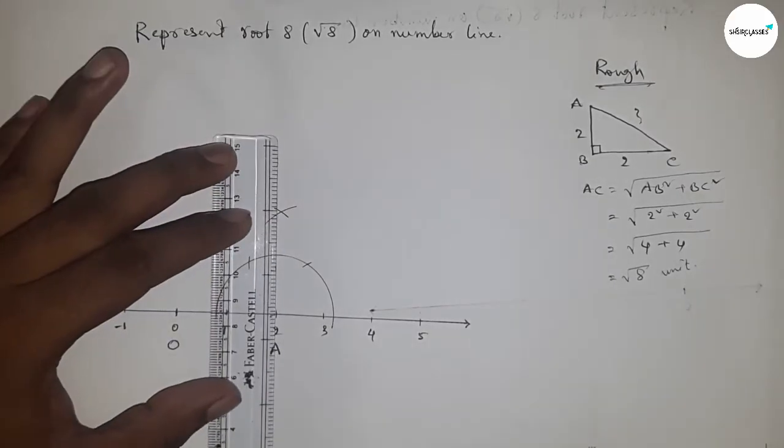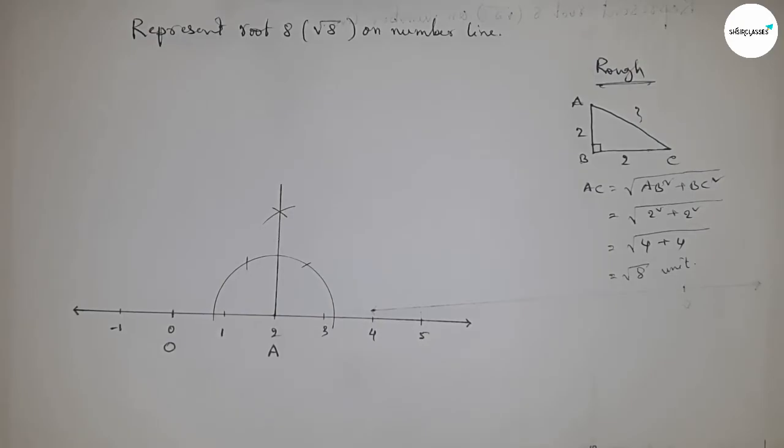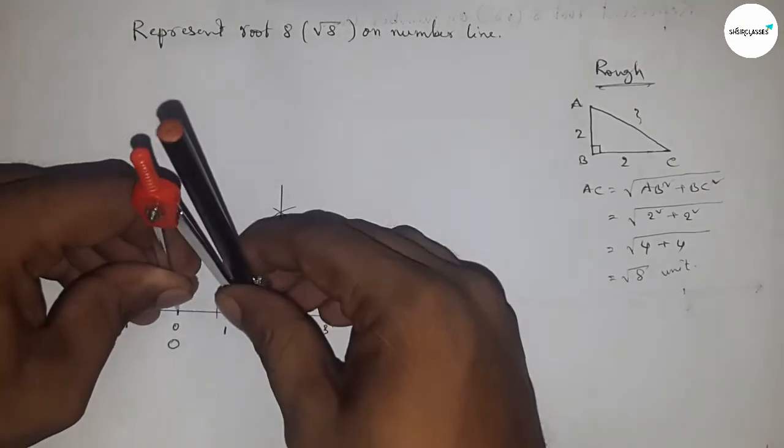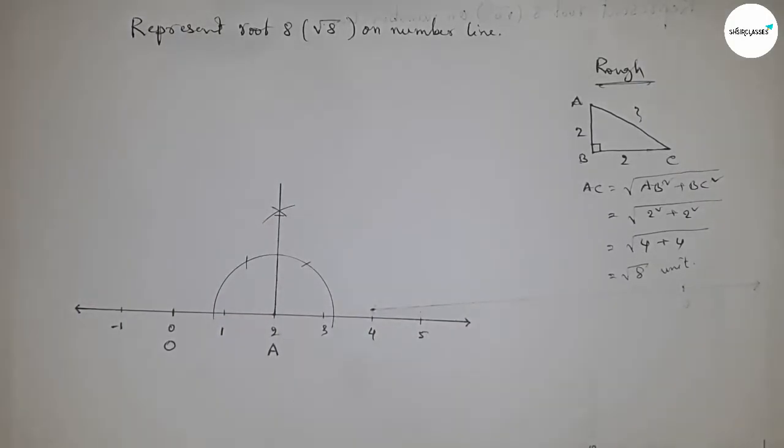Now joining this. Now taking length two unit by compass by this way and putting the compass here and cut here. So this is B point and this is two unit length.